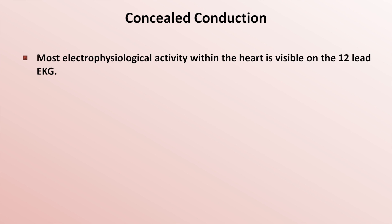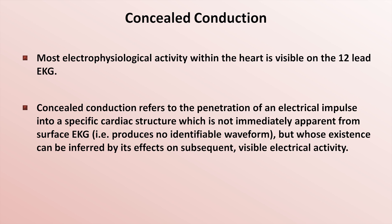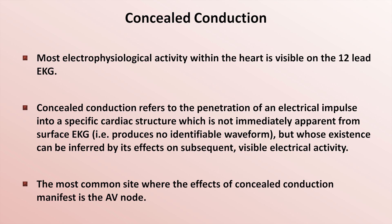The next topic is concealed conduction. Most electrophysiological activity within the heart is visible on the 12-lead EKG. Concealed conduction refers to penetration of an electrical impulse into a specific cardiac structure which is not immediately apparent from the surface EKG — that is, it produces no identifiable waveform. However, its existence can be inferred by its effects on subsequent visible electrical activity. The most common site where the effects of concealed conduction manifest is the AV node.